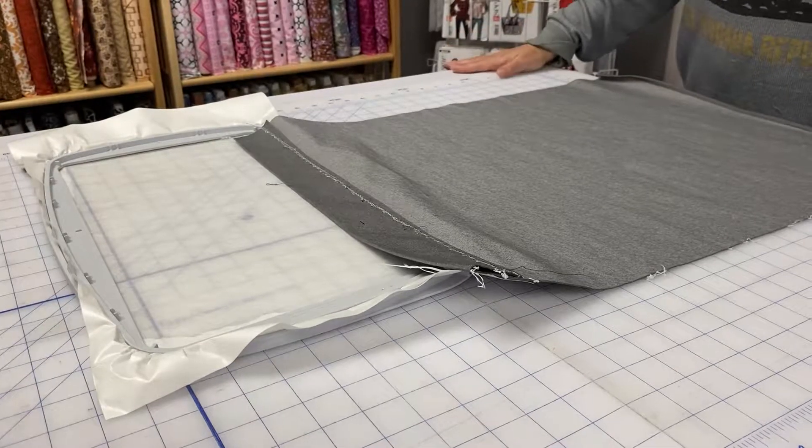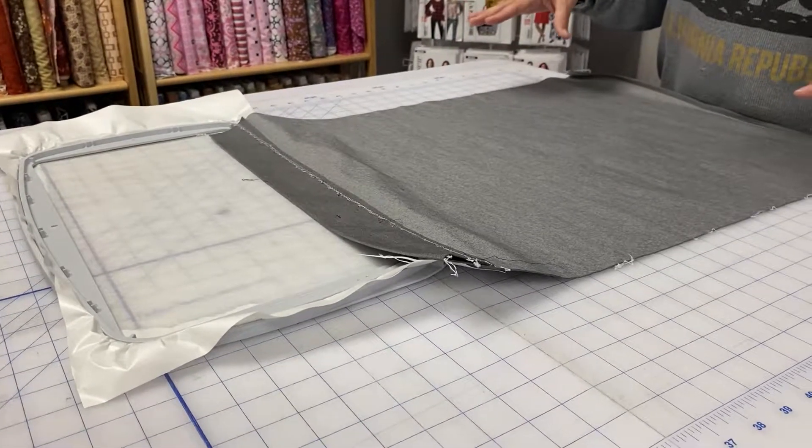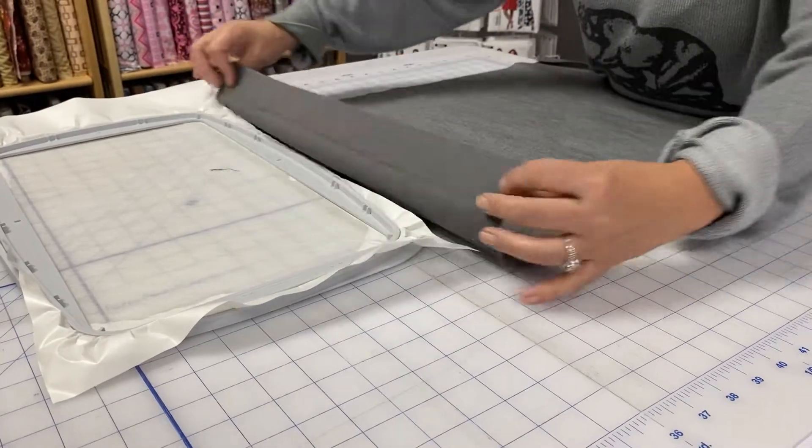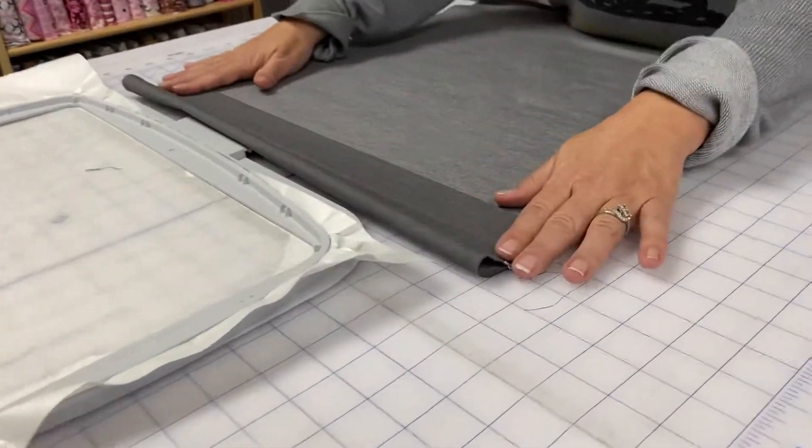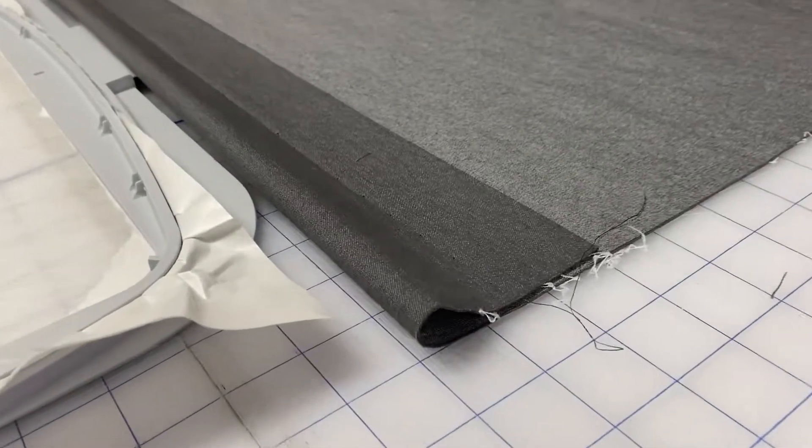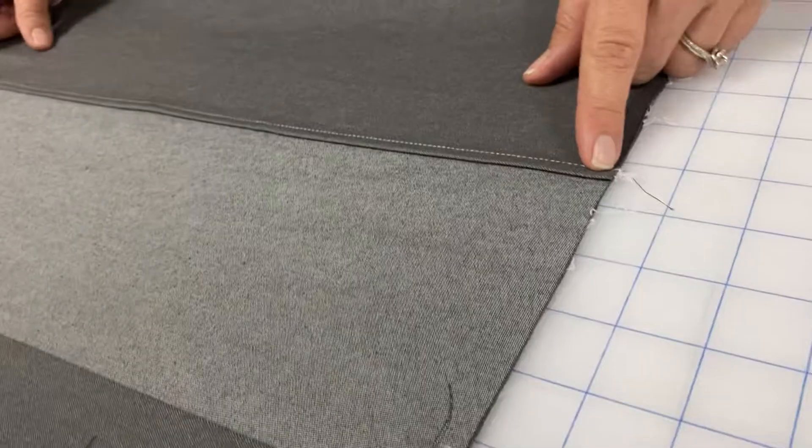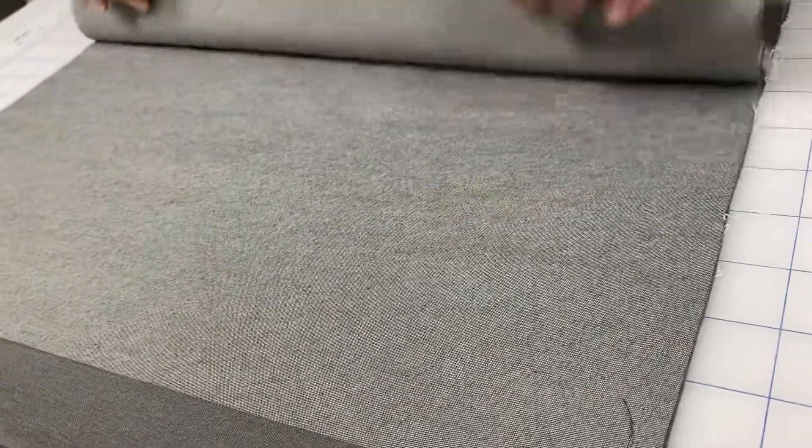So today we're going to hoop our fabric for a pillow cover. We've already got a blind hem here for our buttonholes and a narrow edge hem here for the other side. So we're going to start.